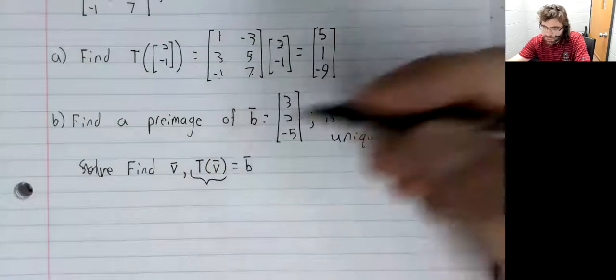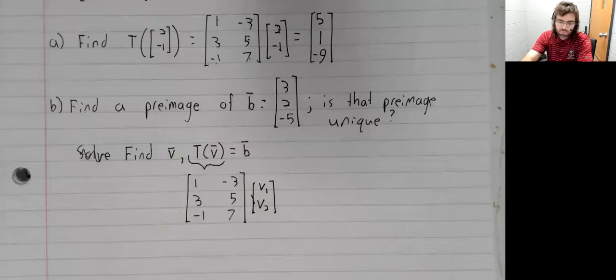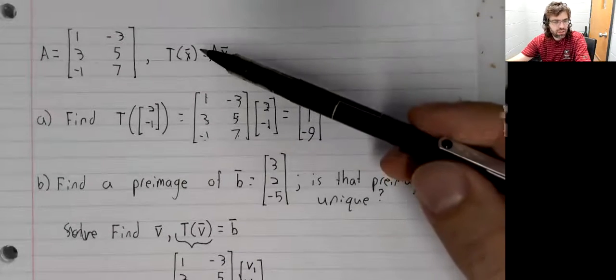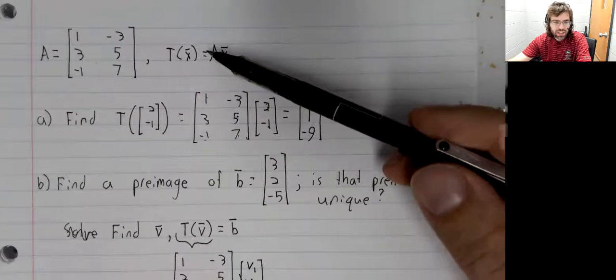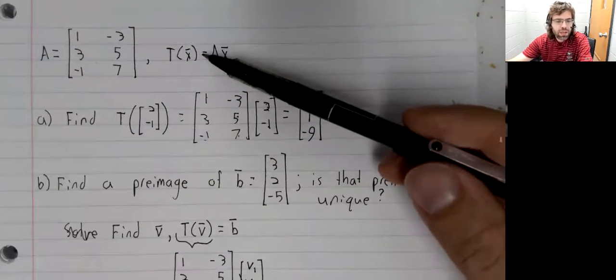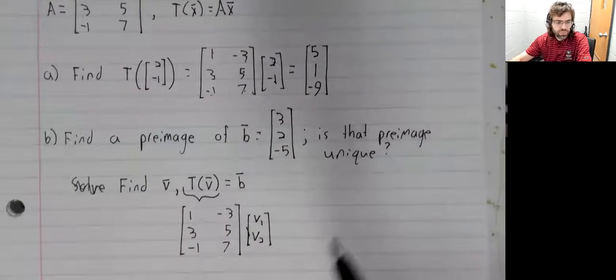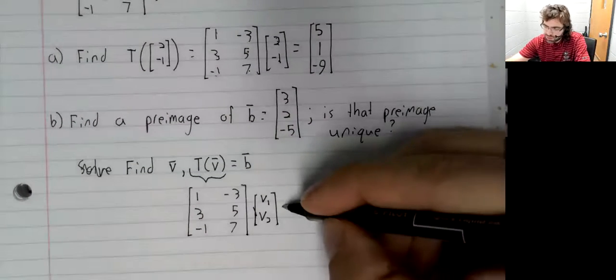T(v) - well, by the way we defined this transformation, T(v) is this matrix times v.